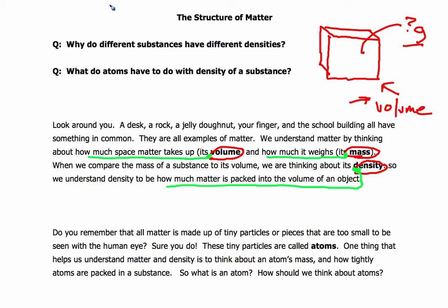Do you remember that all matter is made up of tiny particles or pieces that are too small to be seen with the human eye? These tiny particles are called atoms — get that circled. One thing that helps us to understand matter and density is to think about an atom's mass and how tightly atoms are packed in a substance.